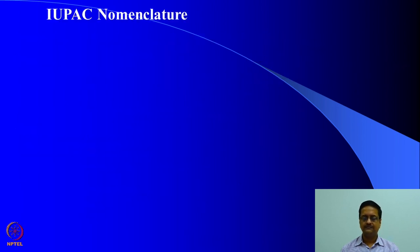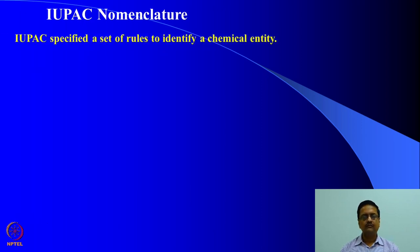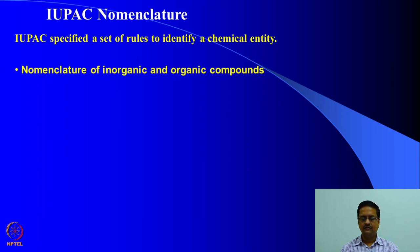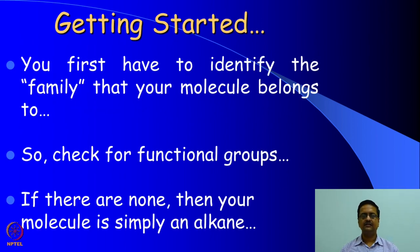Some of you might have studied IUPAC nomenclature in previous years during your 10+2 studies. We will initially go through the basic knowledge you may have, and then take you through advanced parts of IUPAC nomenclature which will certainly be new to many of you. IUPAC specified a set of rules to identify a chemical entity, allowing a specific name for a given compound instead of having different names in different countries or languages.